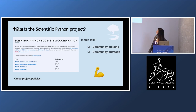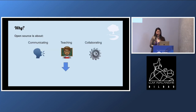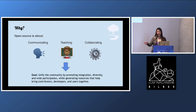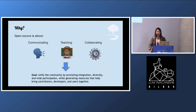In this short talk I want to talk mostly about community building and community outreach, which is what I've been doing as part of the Scientific Python project. Why? Because open source is more about communicating, teaching, and collaborating than it is about the code itself. We all love the open source community because of the community itself, not necessarily the code.